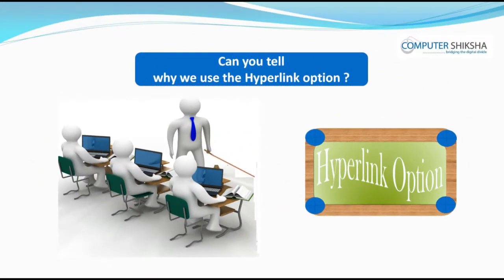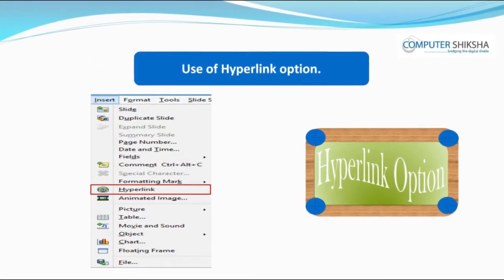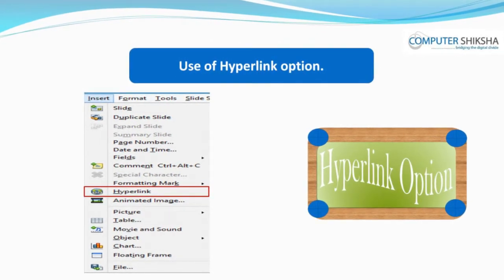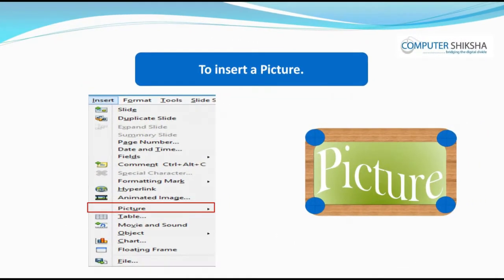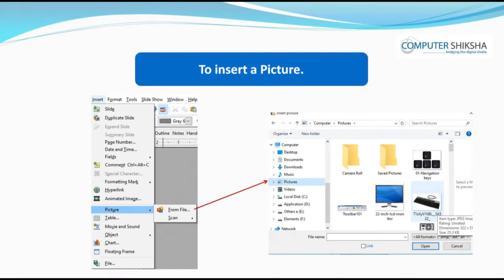Can you tell why we use the hyperlink? By using hyperlink, you can give a link for any file on your Impress file and by opening this link, you can work on these files. How will you insert a picture in the Impress file? To insert a picture, you first need to click on the Insert option and then select the Picture option. From there, you can select a picture of your choice and insert it.